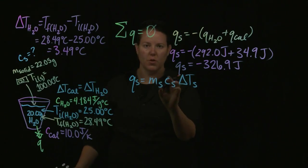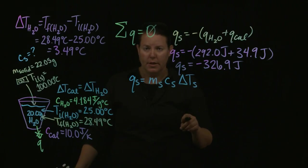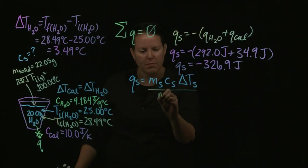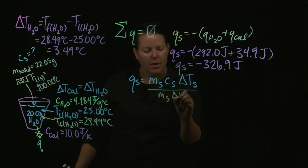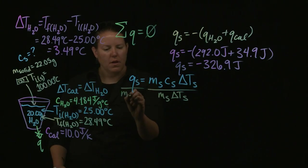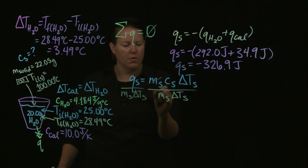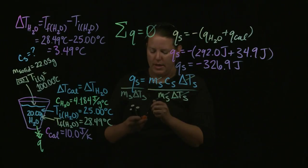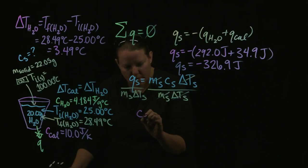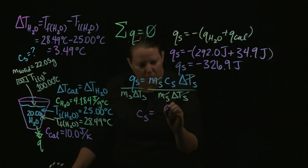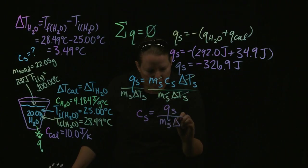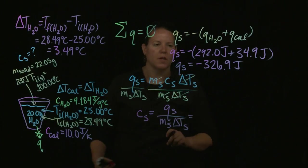Now that I have Q of S, I need to solve this equation for C of S — that's what I'm looking for. To solve for the specific heat capacity of the solid, I need it alone on one side in the numerator. It's already in the numerator, so I just divide both sides by whatever's around it. Those cancel out, and I get C of S equals the Q of the solid divided by the mass of the solid divided by the change in temperature of the solid.